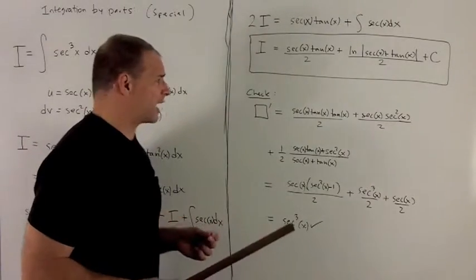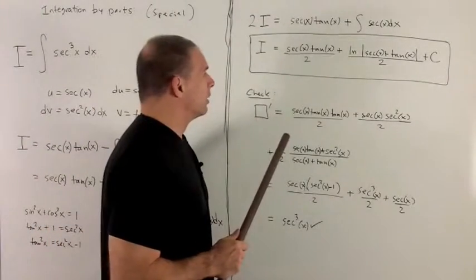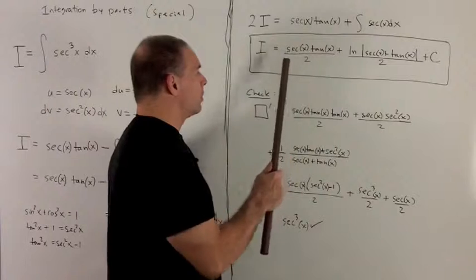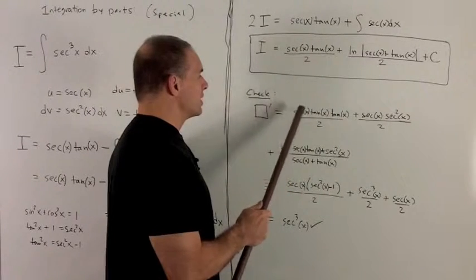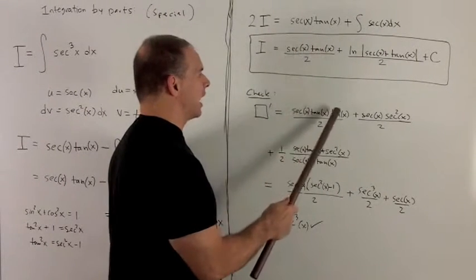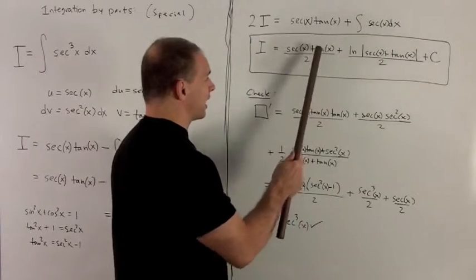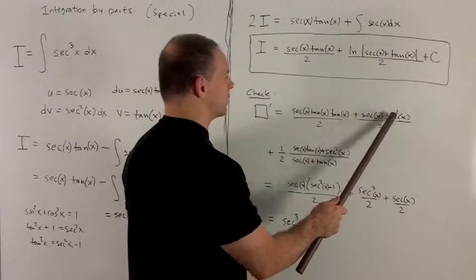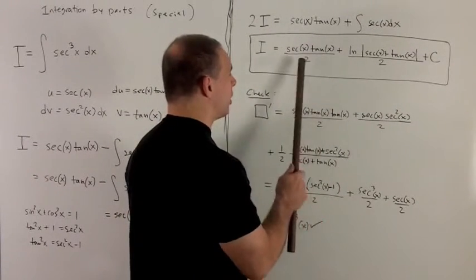Of course, we're going to check, so let's take a look. So here I'm going to use a product rule. So derivative of the first is secant tangent times the tangent, and then derivative of the second is going to be secant squared. So we have secant squared times a secant all over 2.